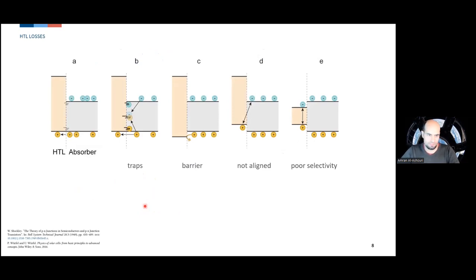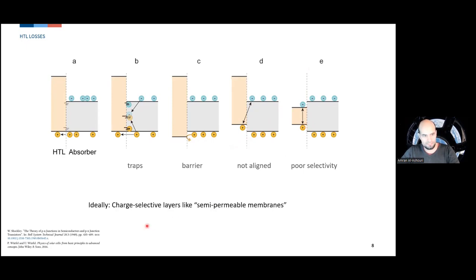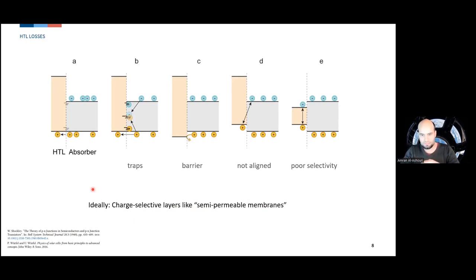There are a few things that can go wrong at the hole-selective interface. In the ideal case, everything is aligned and you get holes out of the absorber. But you can have traps in between that are attractive to both electrons and holes — the worst traps are those in the middle of the bandgap because the rates are the same and you lose a lot of charge carriers. You can also have a barrier where holes need additional energy to enter the hole-selective layer. Then there can be a misaligned interface where you lose free energy, or poor selectivity where both charge carriers recombine there. Ideally, charge-selective layers act as semi-permeable membranes — a term coined by Shockley and by Würfel — letting through only one charge carrier, achieved by energetics, conductivity asymmetry, doping, or intrinsic molecular asymmetries.